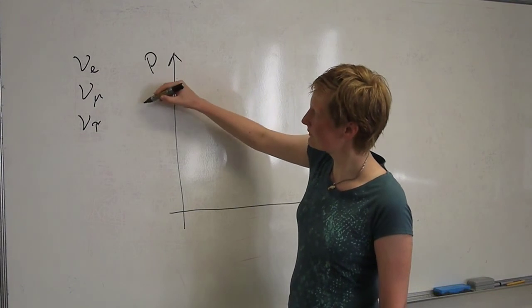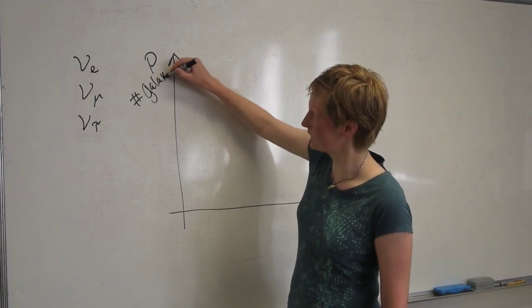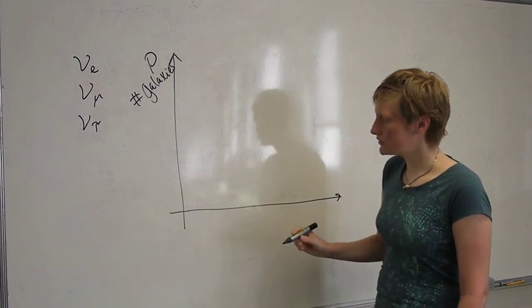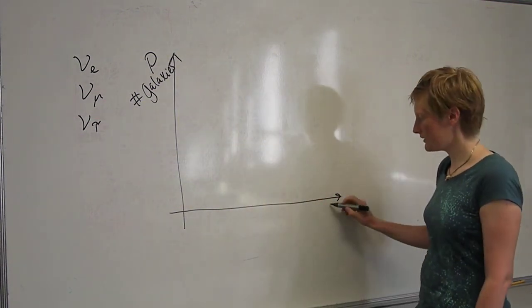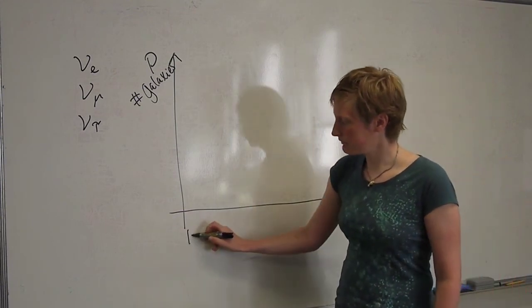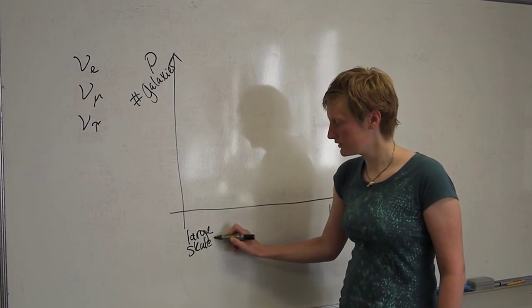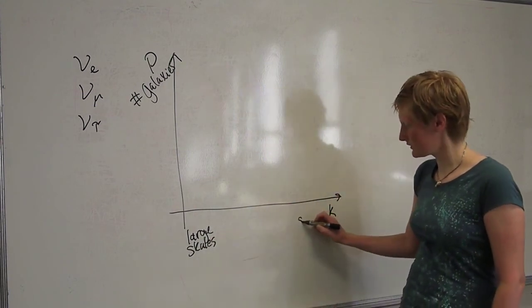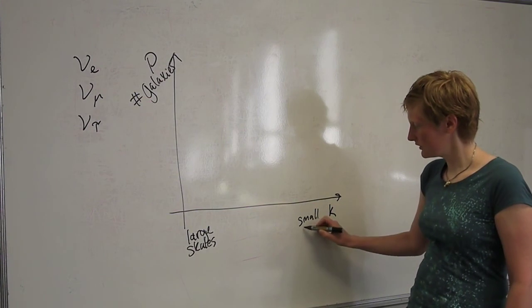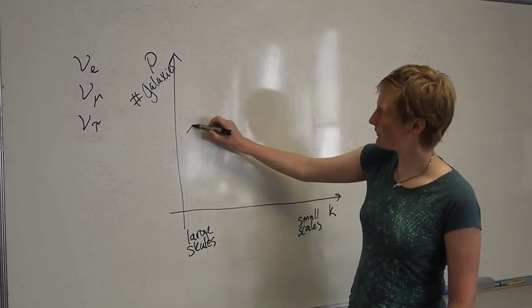So here we have power, so number of galaxies. And it's usually plotted as a function of k which is not this distance but the inverse distance. So here we will have large scales, so huge distances, and here we will have small scales. And then the power spectrum looks something like this.